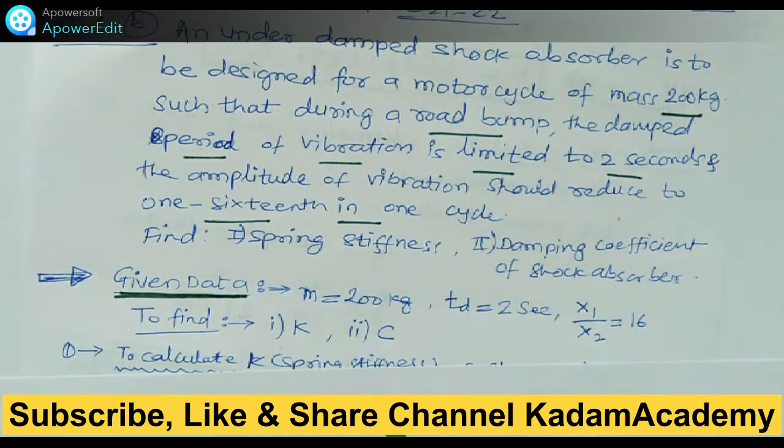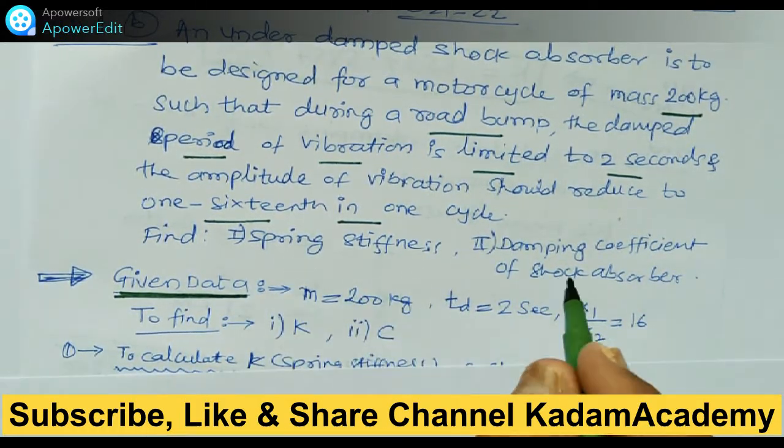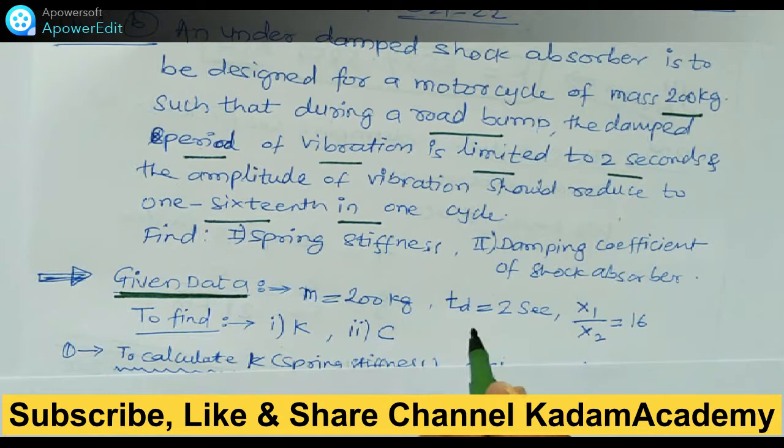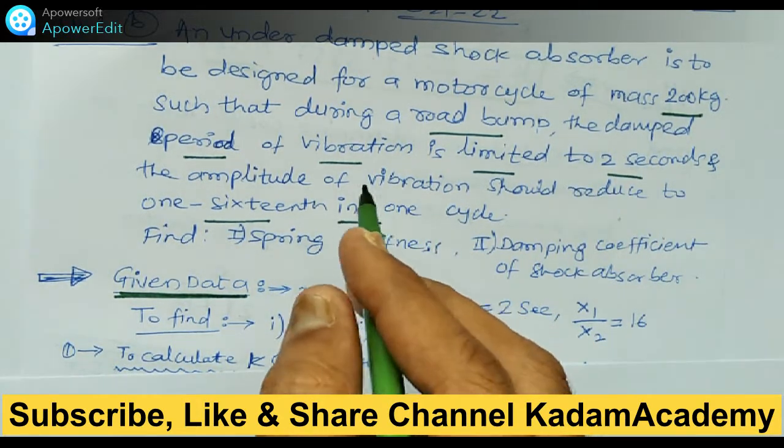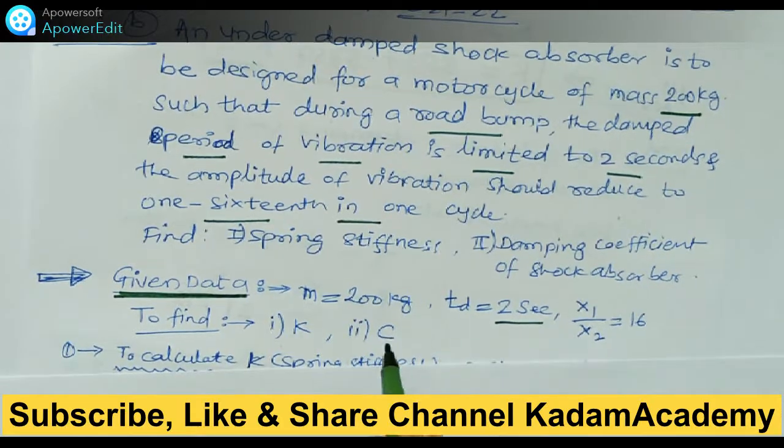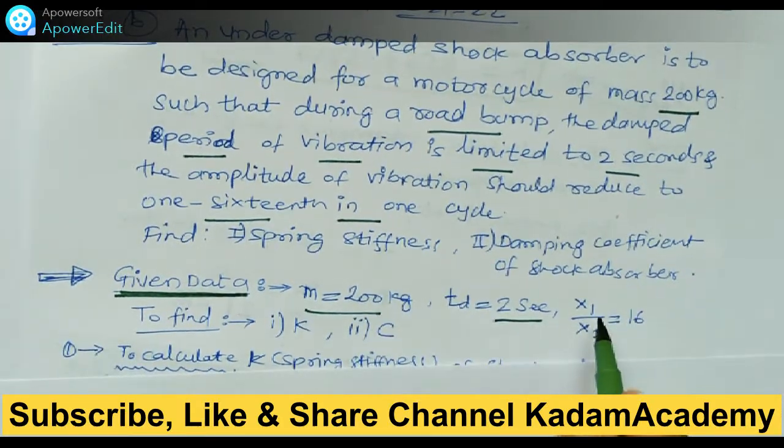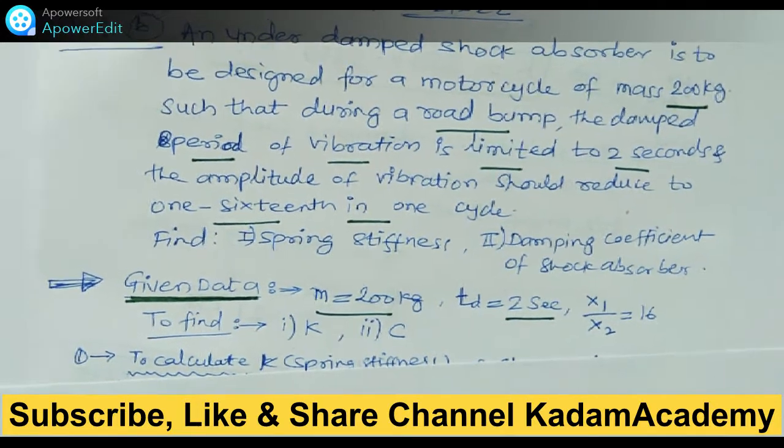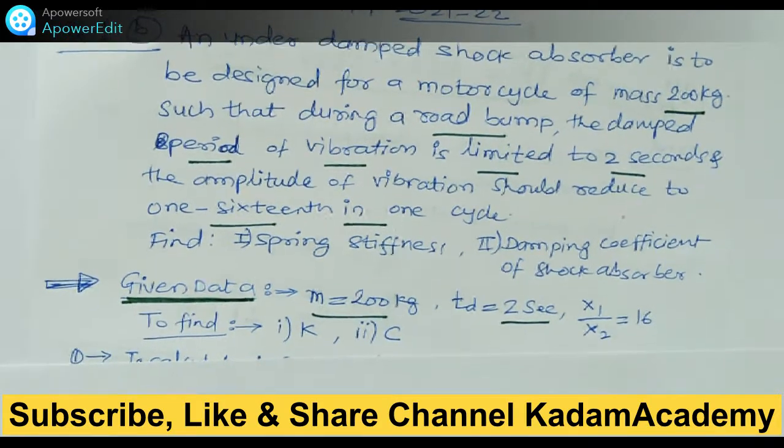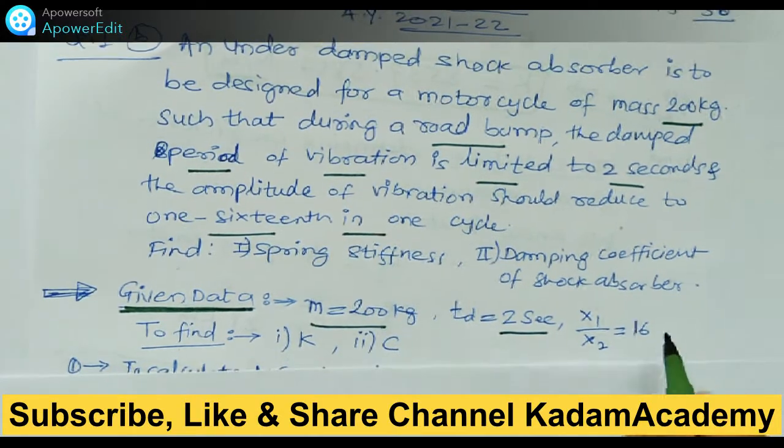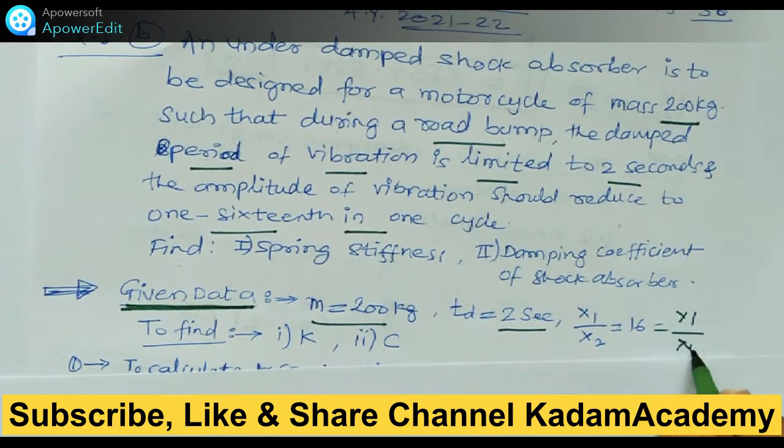So what we have to find out: spring stiffness and damping coefficient. The given data is m = 200 kg, damped time period Td = 2 seconds, and x1 by x2 ratio is 16, meaning it reduces suddenly in one cycle.